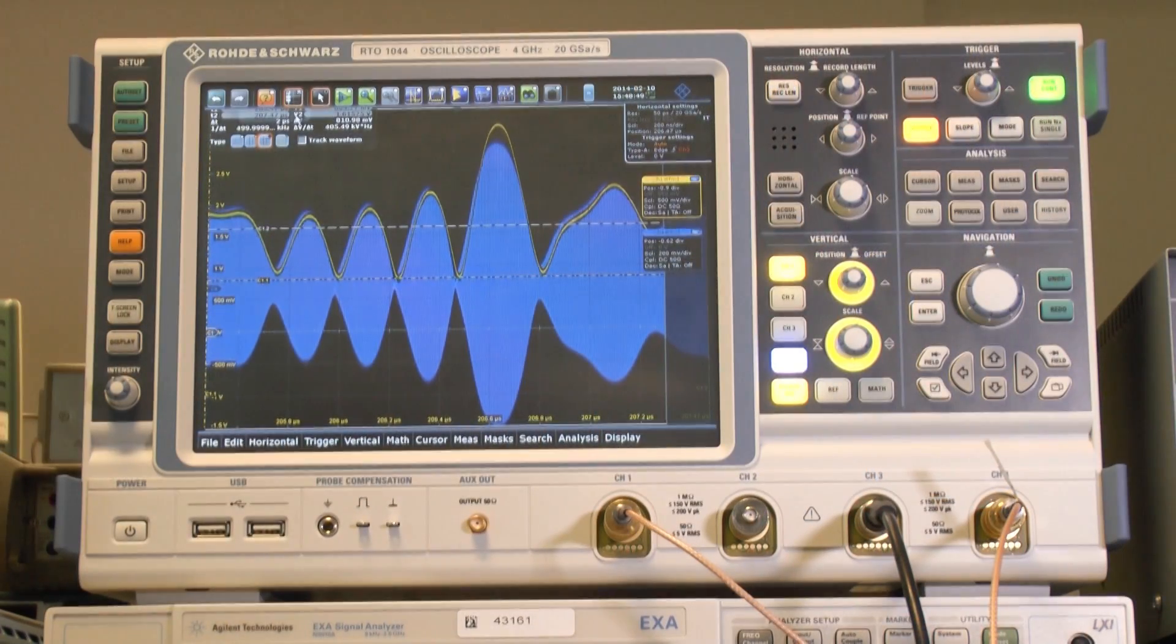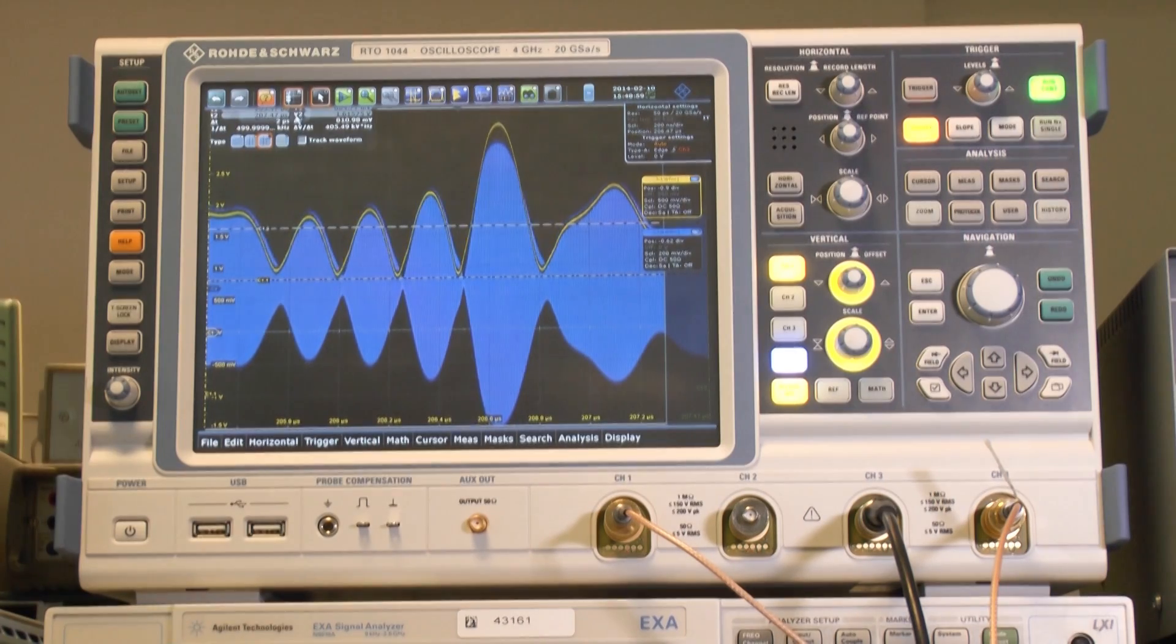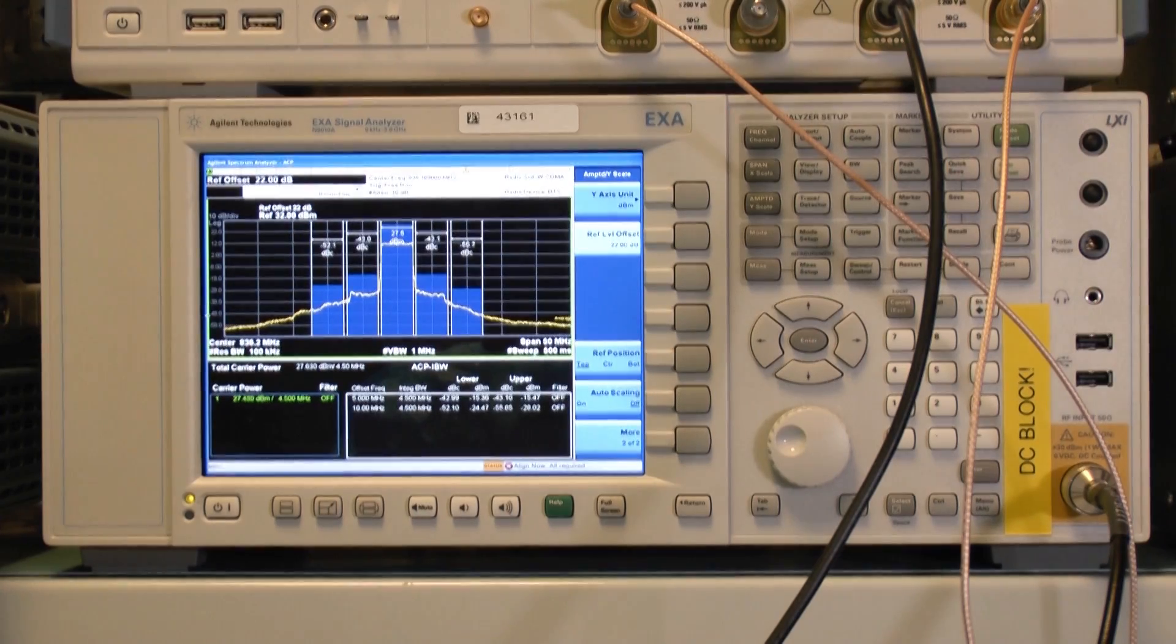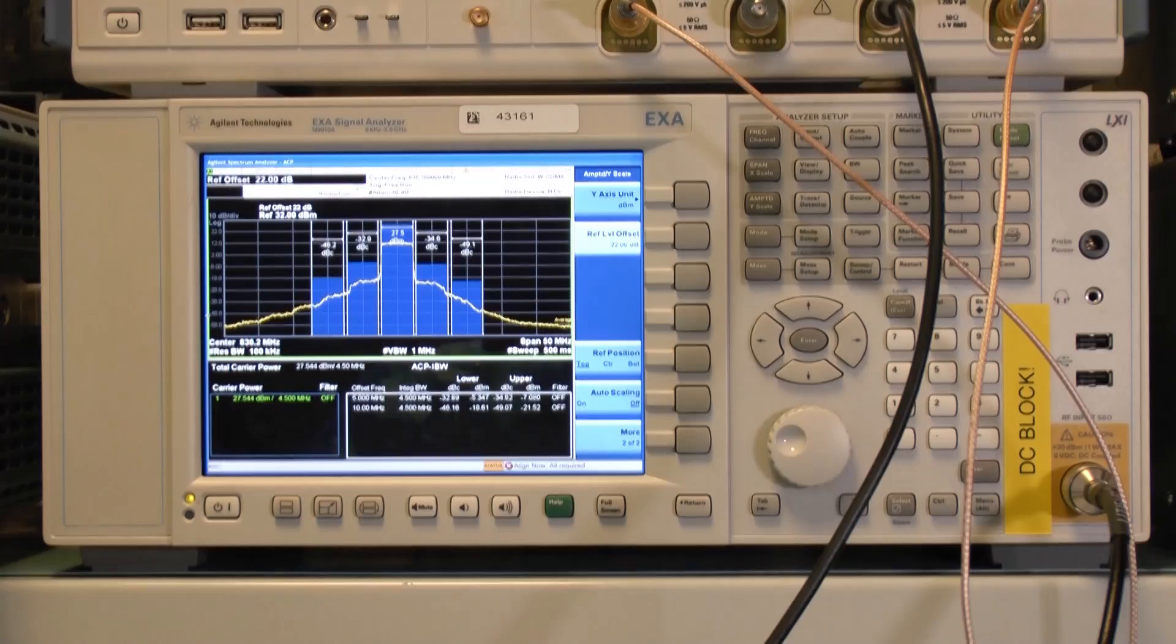Another basic thing that we can demonstrate with this setup is that the importance of the exact alignment of the RF amplitude signal and the envelope signal from the modulator. So what I will do now is alter slightly the relationship in time between those two signals. And what we can see on the oscilloscope is that these two signals get misaligned. And now if we look at the spectrum analyzer, we can see the effect of that misalignment on the spectrum, which is basically a much worse ACLR, much worse linearity.